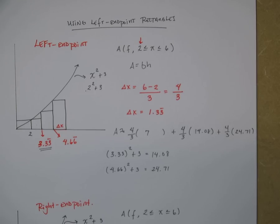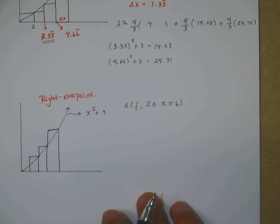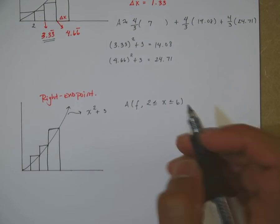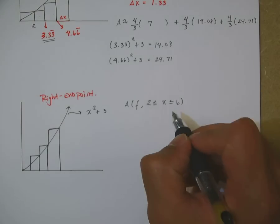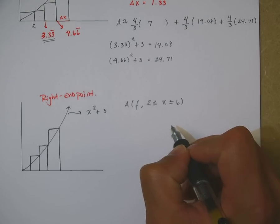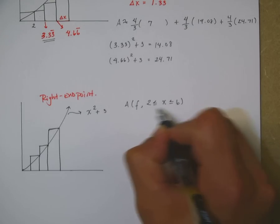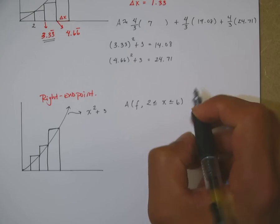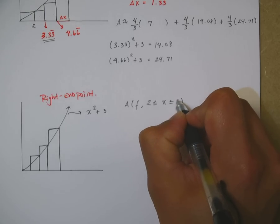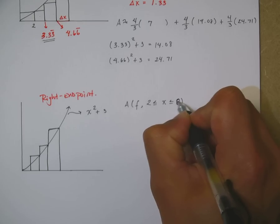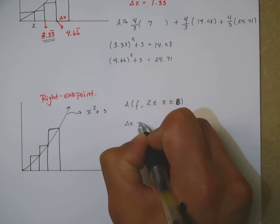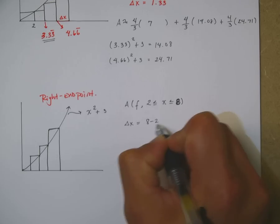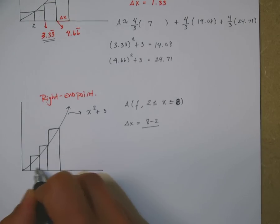Now when we do right endpoint rectangles we're going to do the same thing. Same exact thing. In order to make this simple instead of going from 2 to 6, let's go from 2 to 8. Let's make this a 2 and 8 just to make our math simple. So what's our delta x? Same thing, 8 minus 2. How many rectangles? 1, 2, 3. They'll tell you if they want 4 or 5 or 6 rectangles.